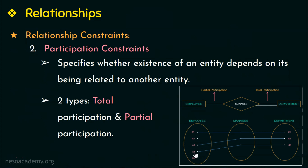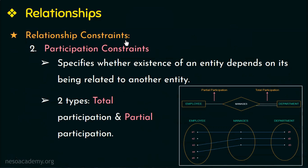Only E1, E3, and E4 are managers. So the employee entity set participates partially in this relationship type 'manages,' hence partial participation, which is represented by a single line. The participation of the department entity in the relationship 'managers' is total, therefore represented by a double line. The first constraint is cardinality ratio and the second is participation constraints.